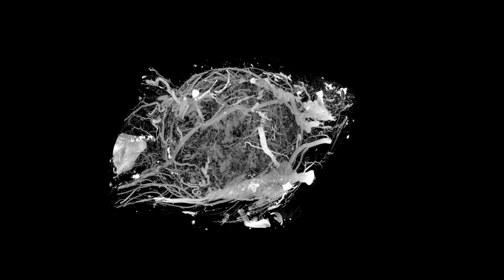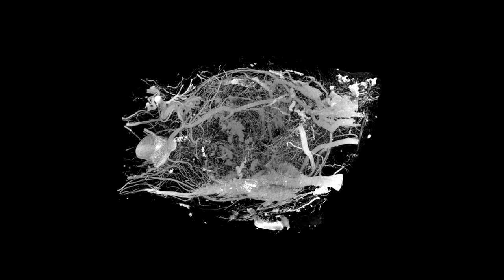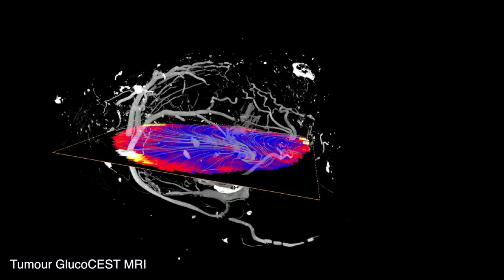Tumours tend to be quite energy hungry and grow much faster than normal tissue using up more glucose and also have a rich supply of blood vessels. By detecting glucose, we can illuminate the tumour in the scanner producing high contrast images.